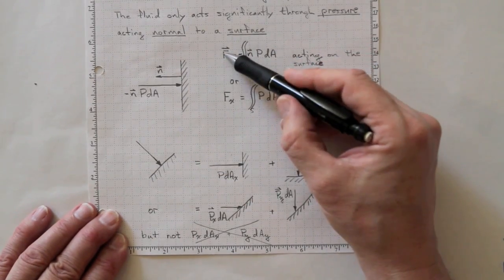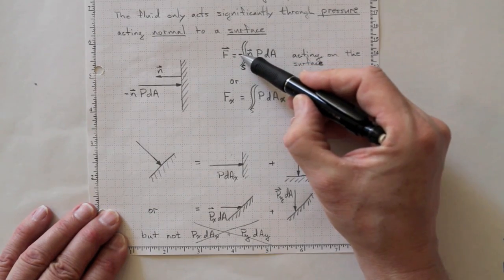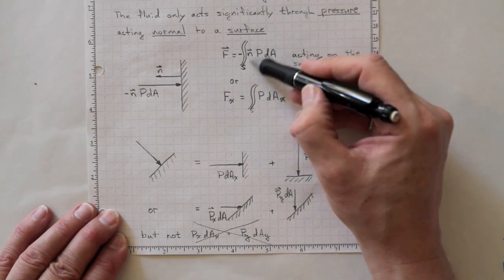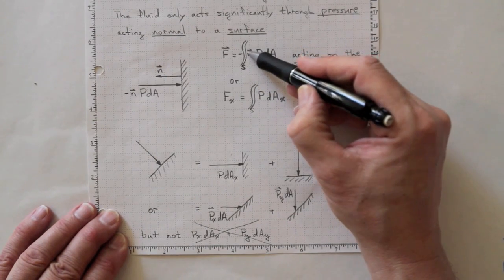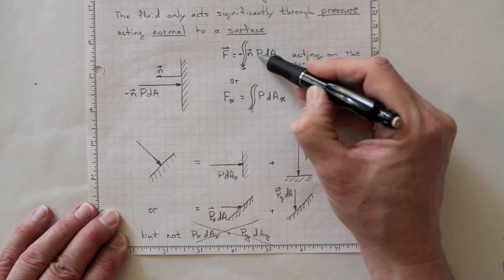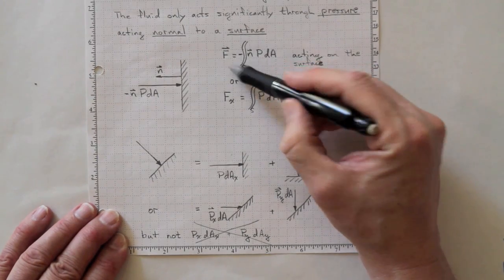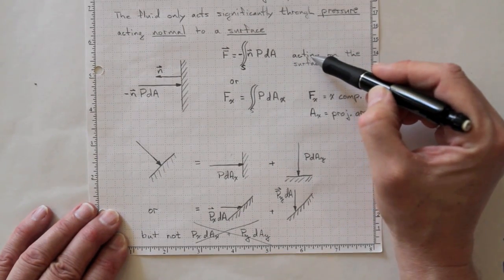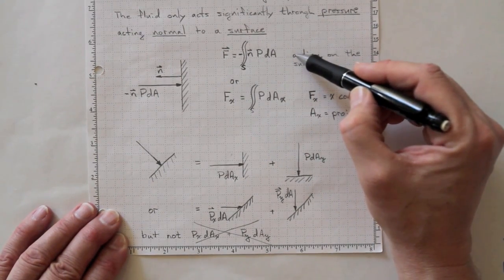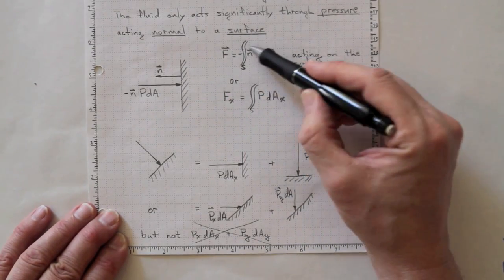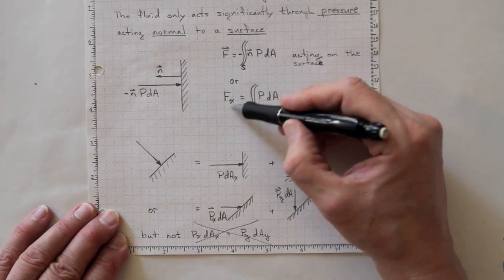So that the total force acting on the surface, negative because of the direction of the unit normal vector, integral over the surface of the unit normal vector multiplied by the pressure times dA. This is a vector force. And if we want to do vector calculus, we can get the answer out for the complete vector integration. Or we can do it in components.